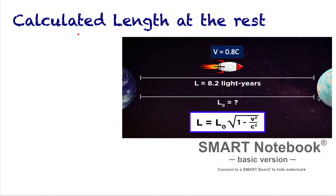We have the length contraction formula: L = L0 times the square root of 1 minus v squared over c squared. We want to find L0, which is the length calculated from Earth, so we need to rearrange this formula.